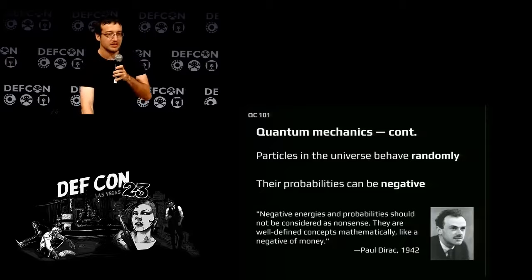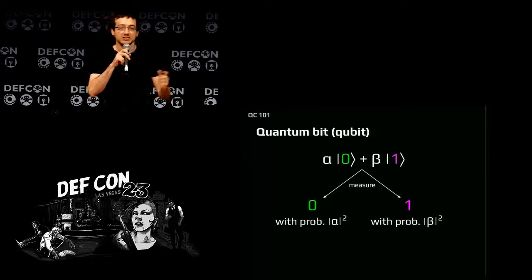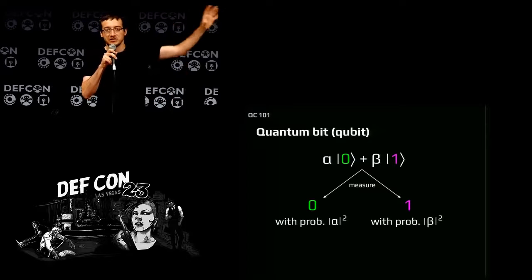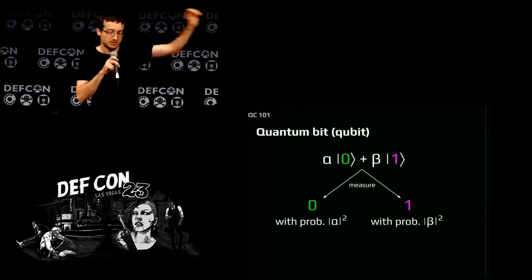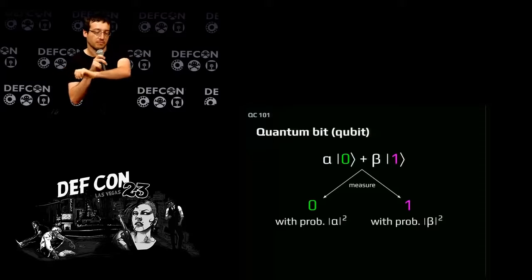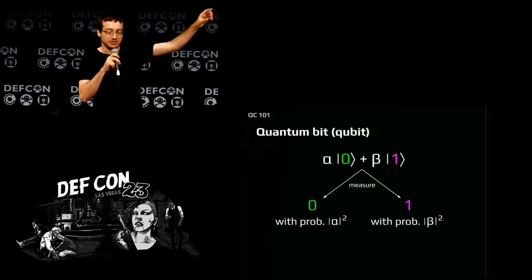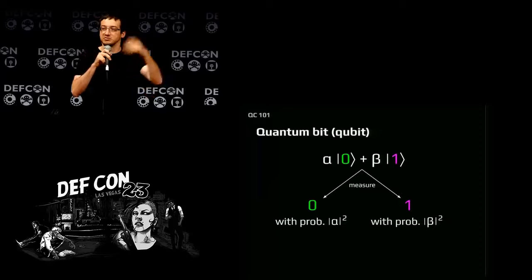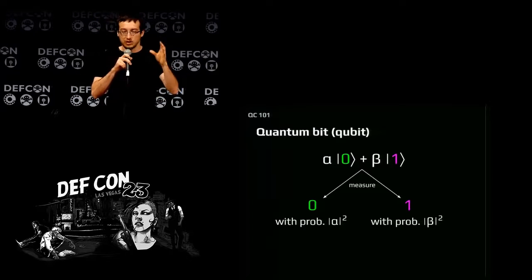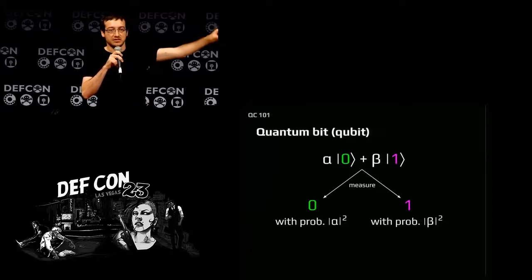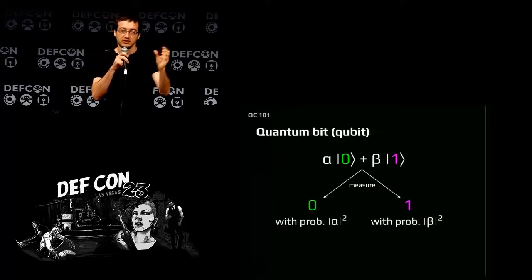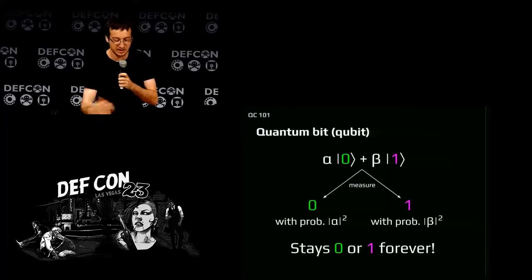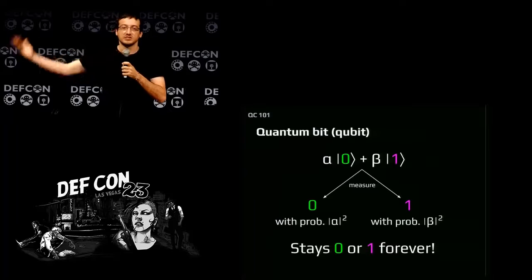You know what a classical bit is — it's either one or zero. A quantum bit can be one and zero at the same time. We call this superposition. When you have not looked at the qubit, it's in a state where if you observe it and ask what its value is, it will be zero with some probability and one with some other probability. The alpha and beta coefficients are called amplitudes; they can be negative or complex. You take the amplitude, square it, and that's the actual probability — a number between zero and one. When you observe the qubit, it becomes zero or one forever — it's no longer a quantum object.